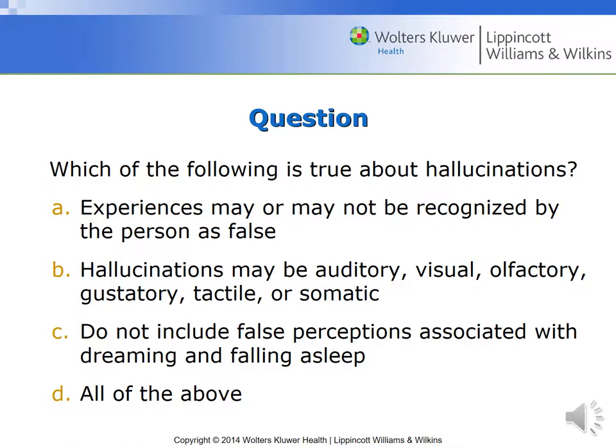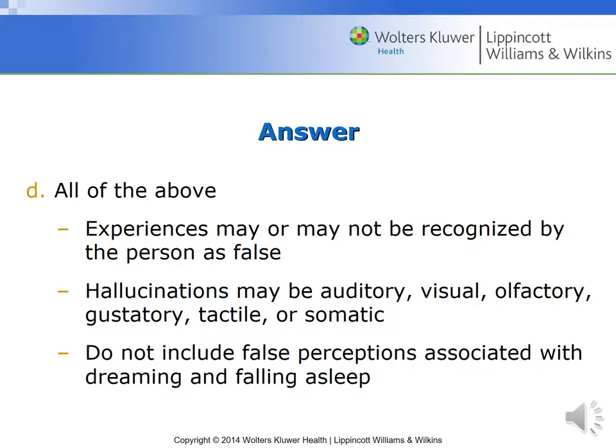Here's a question: which of the following is true about hallucinations? A — the experiences may or may not be recognized by the person as false. B — hallucinations may be auditory, visual, olfactory, gustatory, tactile, or somatic. C — they do not include false perceptions associated with dreaming and falling asleep. D — all of the above. If you answered all of the above, you are correct.